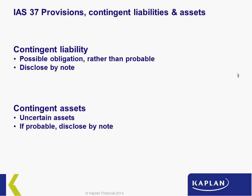IAS 37 also covers contingent assets — essentially the opposite side of the coin. If you're the company doing the suing, you potentially have a possible asset as a result of a past event. If it is probable that you will receive the benefit, you may disclose it by note. Anything less than probable should be ignored entirely and gets no mention at all.